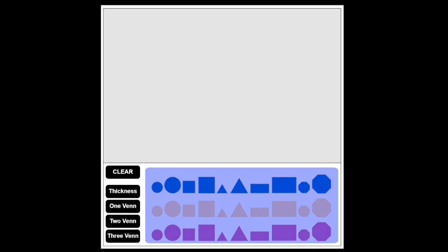This program features 60 unique shape blocks, each with four separate attributes: shape, color, size, and thickness.